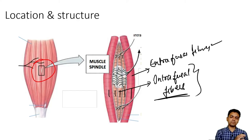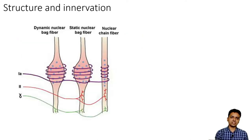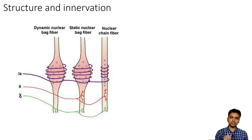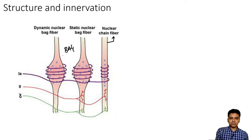This muscle spindle is an encapsulated spindle-shaped organ which is located inside the muscle. Now, there are two types of intrafusal muscle fibers. One is called as nuclear bag fiber and another one is called as nuclear chain fiber. I am differentiating them on the basis of the structure.